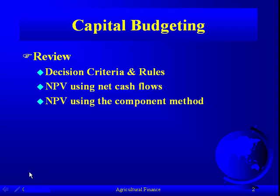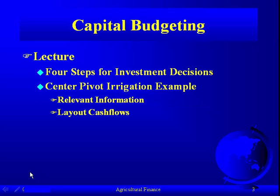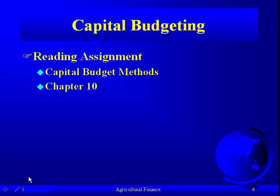Then we talked about the fact that we needed to calculate the net present value using the component method, because we need to analyze the capital budget and look at what makes up the net present value. Today's lecture, we're going to talk about the four steps for investment decisions, and then we're going to do the center pivot irrigation system. The reading assignment is chapter 10.